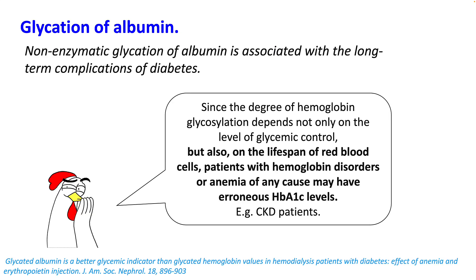Like hemoglobin, albumin is also glycated because of high sugars. We know that hemoglobin A1c can be erroneous if the lifespan of RBCs is shorter or you lose a lot of hemoglobin, for example in CKD and ESRD patients. In these patients, glycated albumin levels can be used to check glucose control, though this test is not widely available.